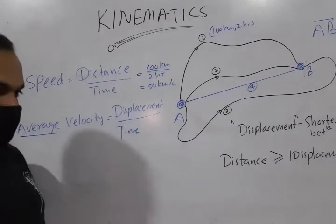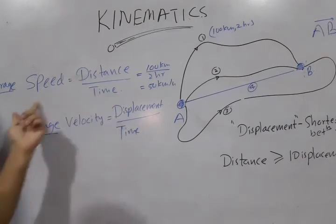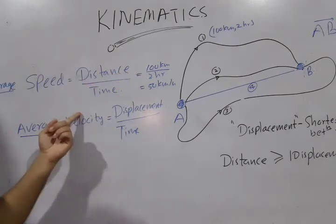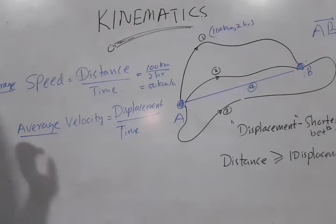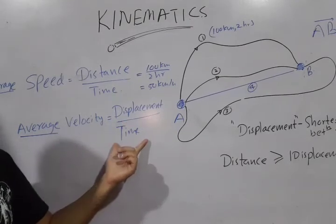Okay. So, this is the definition of speed. Distance divided by time. This is not a vector quantity.